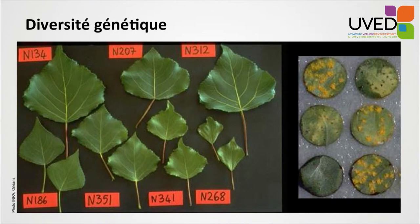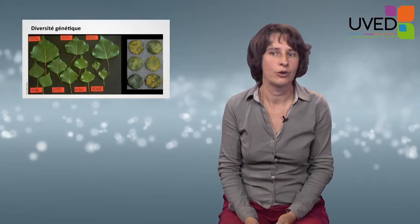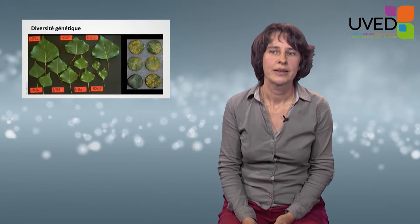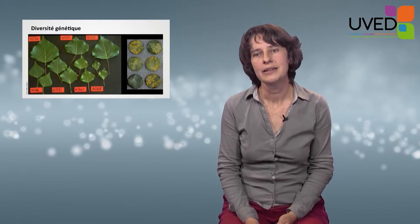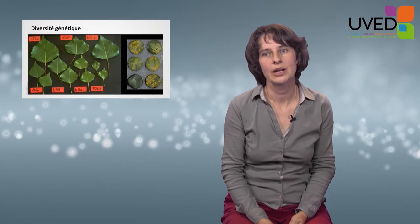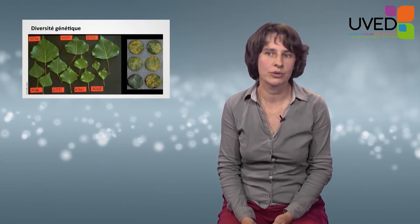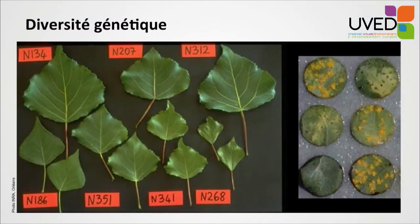The second level of biodiversity is biodiversity hidden in genes — genetic diversity. To illustrate this notion, we have here leaves of black poplar, of different sizes and shapes due to the environment, but also due to the genetic diversity within the population of black poplars. When we inoculate the leaves with a fungus that causes a disease, we see a different level of sensitivity and susceptibility due to genetic diversity.